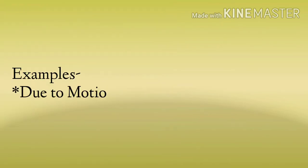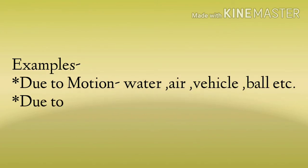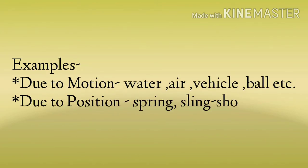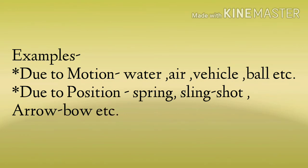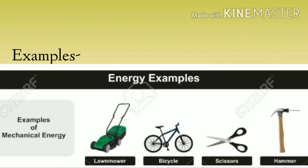Mechanical energy के examples — due to motion: water, air, vehicle, ball. Due to position: spring, slingshot, arrow bow, lawn mower, bicycle, scissor, hammer. ये जब move करते हैं या इन पर कोई force apply होता है, इनमें energy एक जगह से दूसरी जगह जाती है. जब kinetic energy और potential energy साथ में आती हैं, तब इनमें जो energy बनती है वो mechanical energy होगी.